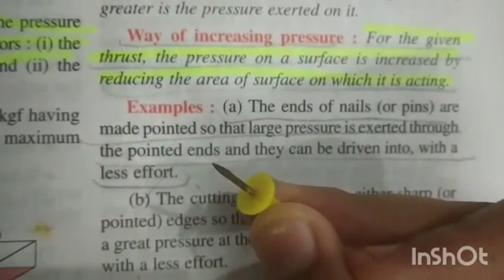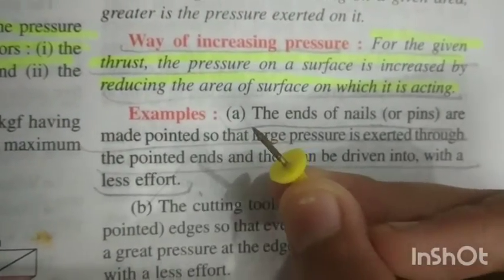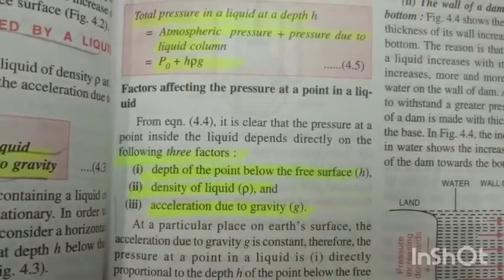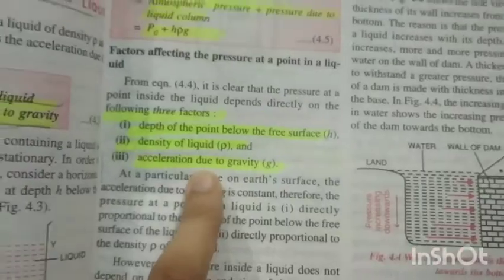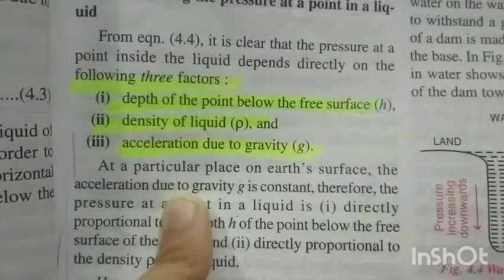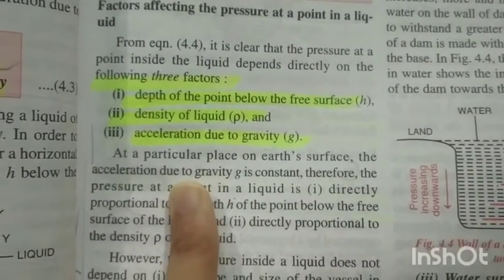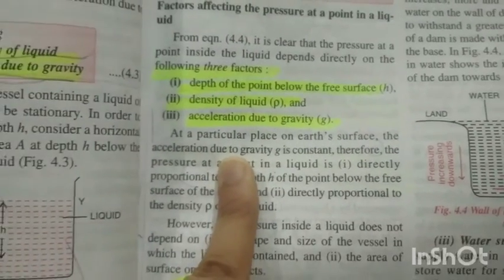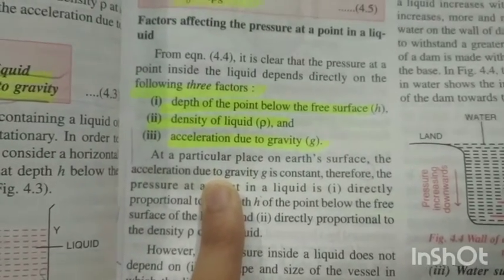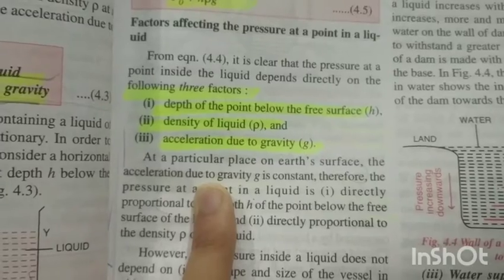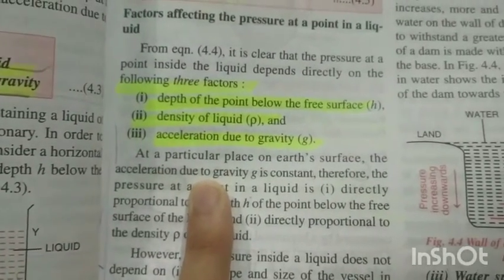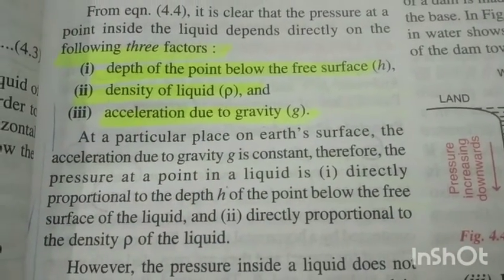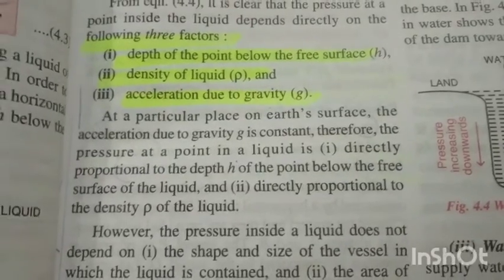If we decrease the area, the pressure will increase. Now, pressure inside a liquid depends on three things: depth, density of the liquid, and acceleration due to gravity. Have you wondered why sea divers wear a very special suit? Because when you go deep inside the ocean the water exerts a huge amount of pressure on your body. The higher the density of the liquid, the more the pressure; the more the depth, the more the pressure.